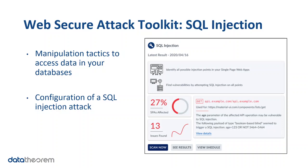In SQL injection, we will run manipulation tactics to access data in your databases. SQL injection attacks are very common attacks that use malicious SQL code for backend database manipulation in order to access information that was not intended to be displayed. This information may include sensitive company data, user lists, or private customer details — personal identifiable information, or PII, which we call leaky data. In the dashboard, you will clearly see all of the injection points as well as vulnerabilities, and we will be able to tell you which SPAs are affected.